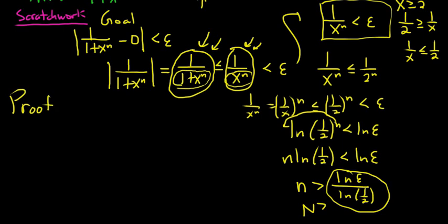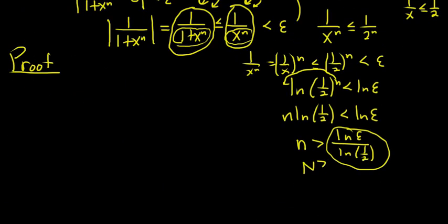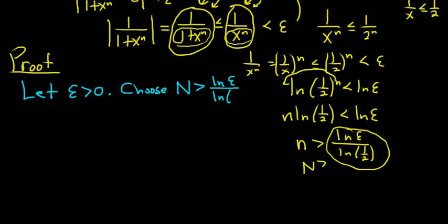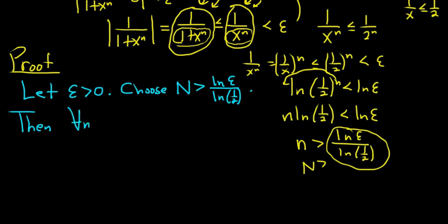Let's write the formal proof. Let epsilon be greater than 0. By the Archimedean property, choose a positive integer N greater than ln(epsilon) over ln(1/2). Then for all little n bigger than capital N, and for all x in our set D (which is the interval with x greater than 2), we look at the difference between 1 over 1 plus x to the n and 0.